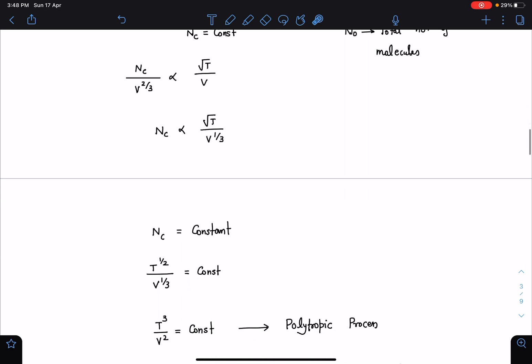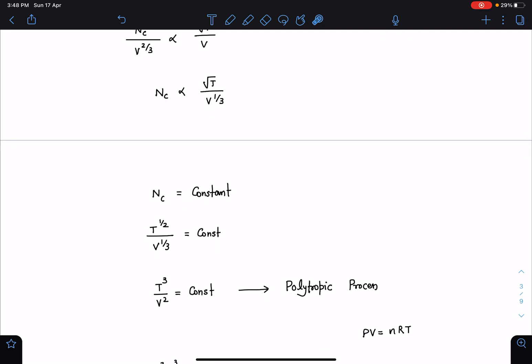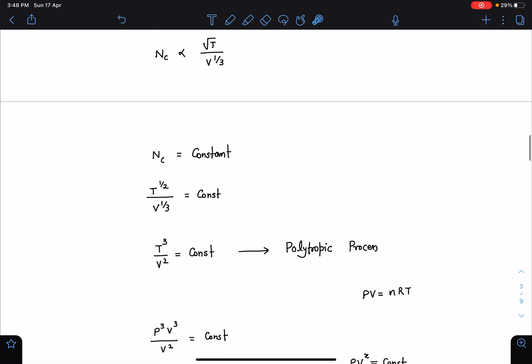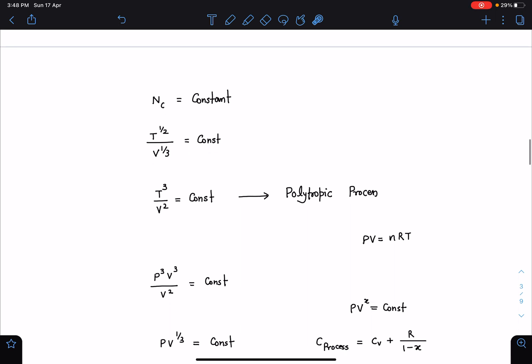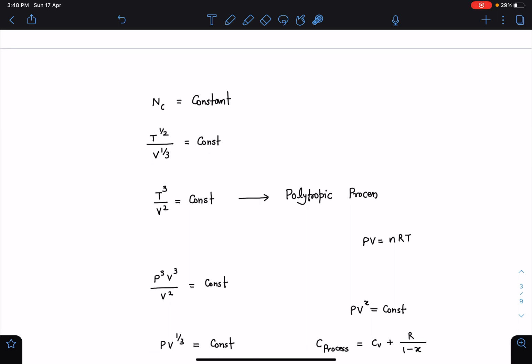Let's take the 6th power, so this will become T cube by V square equals constant. Now I can convert this into a polytropic process equation. If you substitute PV equals nRT to eliminate T, we will get the standard form of polytropic process which is PV to the power x, where x can be any number. You will be getting from here that P times V to the power 1/3 equals constant.